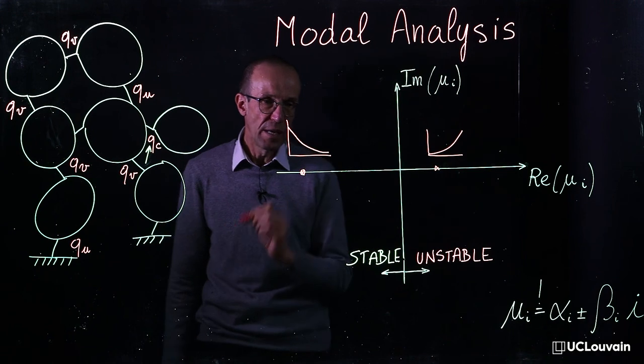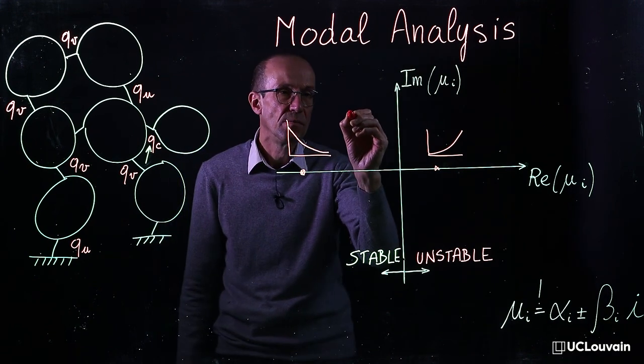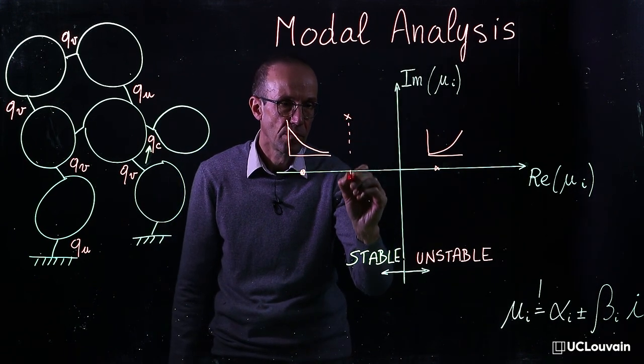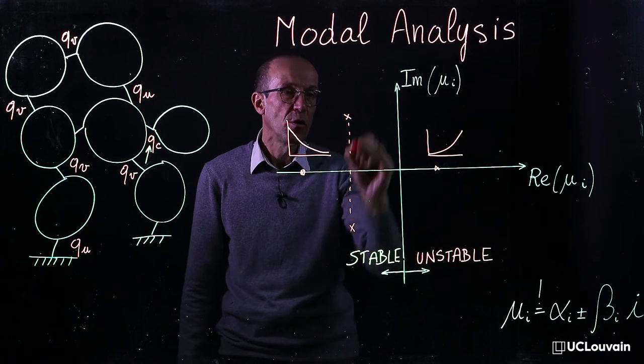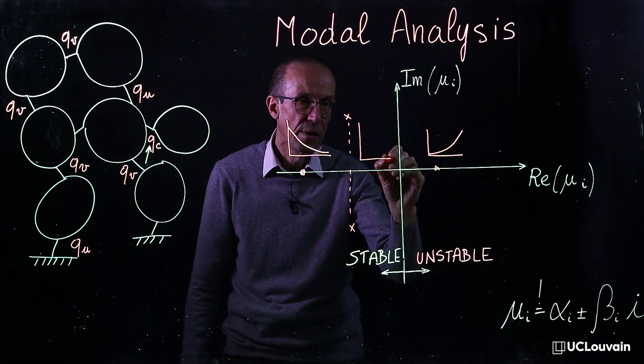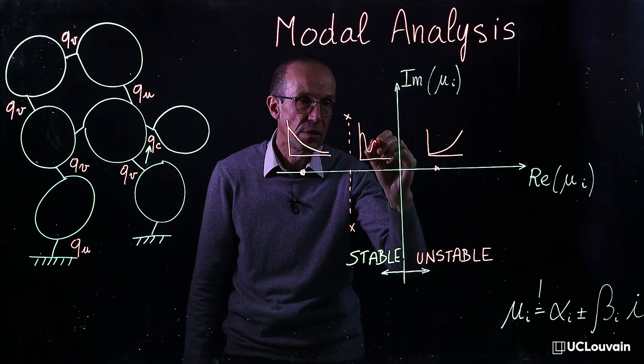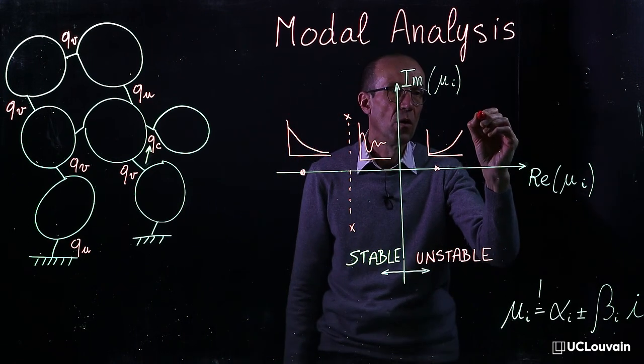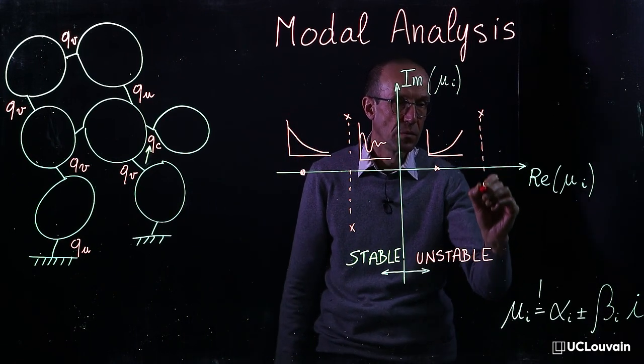Complex conjugated eigenvalues refer to an oscillatory motion that can be stable or unstable.